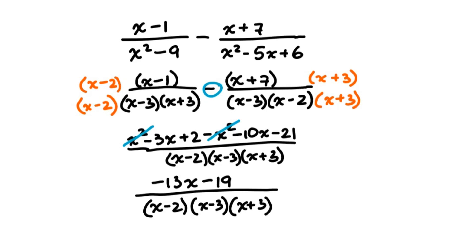Now let's not forget to state the restrictions. The restrictions come from all factors in the original expressions: x minus 3, x plus 3, and x minus 2. Therefore, x cannot equal positive 3, x cannot equal negative 3, and x cannot equal positive 2.